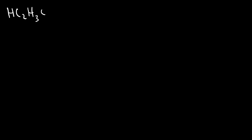Now let's look at another example — acetic acid. An aqueous solution of acetic acid reacts with an aqueous solution of potassium hydroxide. Predict the products, balance the formula equation, and then write the total and the net ionic equations. Acetic acid is dissolved in water, so it's in the aqueous phase, and the same is true for potassium hydroxide.